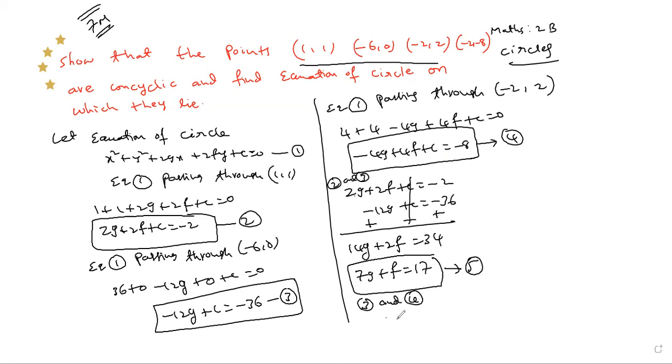From equations 3 and 4: -12g + c = -36 and -4g + 4f + c = -8. Subtracting: -12g + 4g = -8g, and -4f remains.